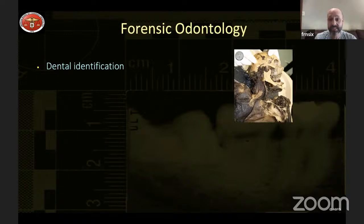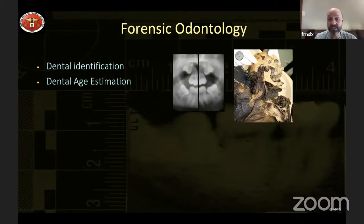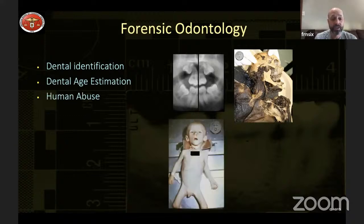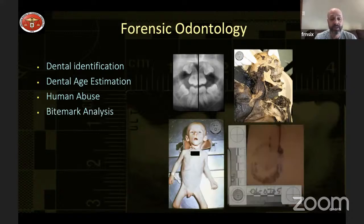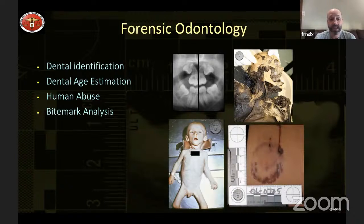Dental identification is probably the most common thing we do on a regular basis. We also do dental age estimation in various circumstances, human abuse cases — such as determining whether a child was bitten — bite mark analysis, where we may help point police in the direction of a suspect, and civil litigation involving malpractice where we can be called in as expert witnesses.